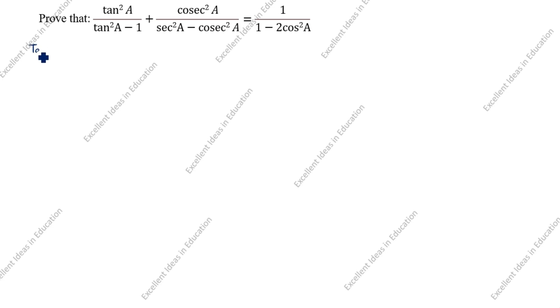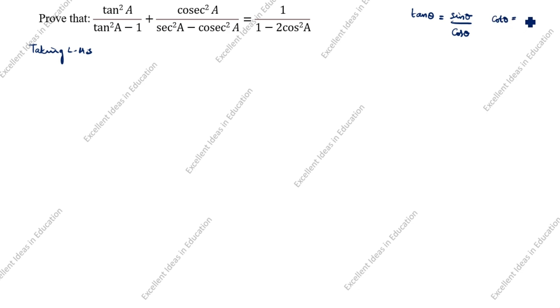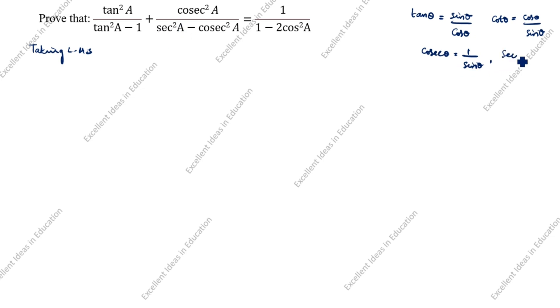First we will take LHS to prove RHS. Taking LHS. Now, tan²a — how will we write tan²a? The formula of tan θ is sin θ divided by cos θ. Cot θ is cos θ divided by sin θ. The formula of cosecant θ is 1 by sin θ. Secant θ is 1 by cos θ. These are the formulas we will use to split the expression.